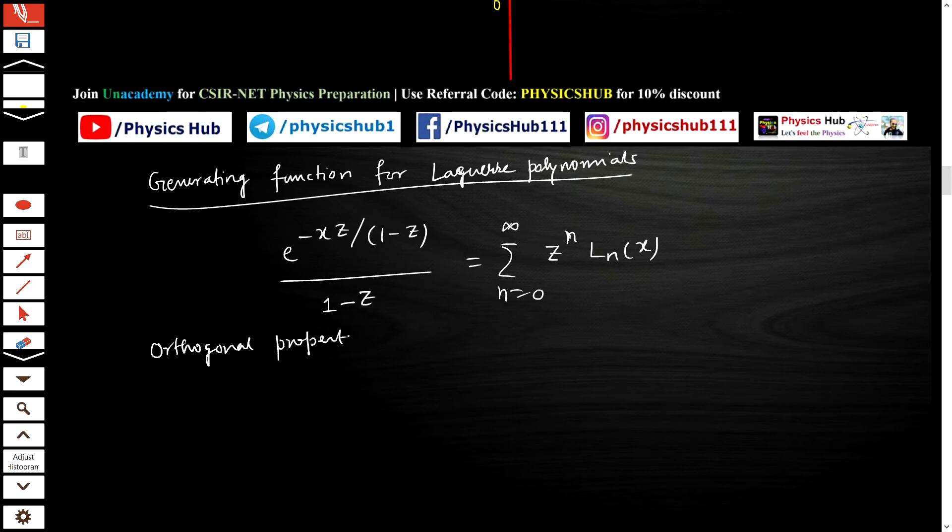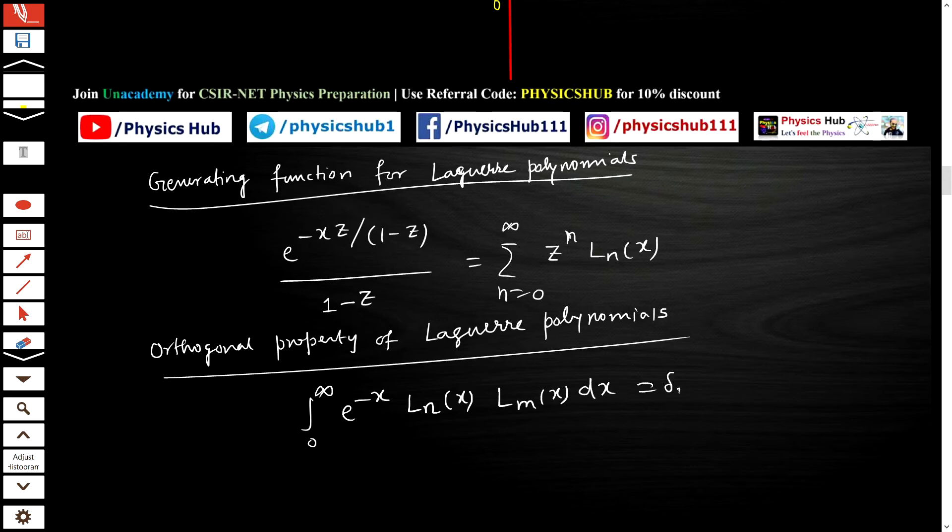Now what orthogonal property does it have? The orthogonal property of Laguerre polynomial is: ∫₀^∞ e^(-x) Ln(x) Lm(x) dx = δₘₙ. This orthogonal property is very important, guys. You may get questions from this.